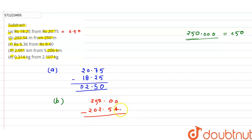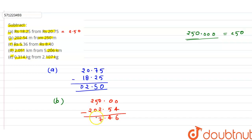We cannot subtract 4 from 0, so we take a carry, making it 10; 10 minus 4 is 6. Taking carries through the digits: remaining 9, then 9 minus 5 is 4; after the decimal, 9 minus 2 is 7; then 4 minus 0 is 4, and 2 minus 0 is 0. So 250 minus 202.54 equals 47.46.